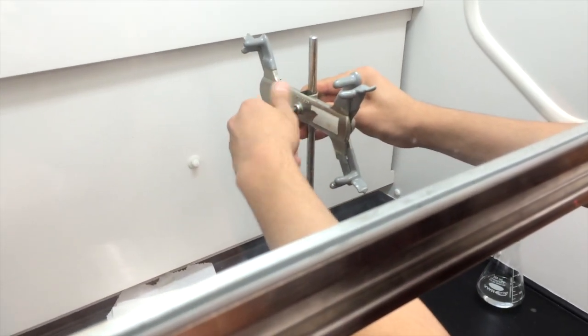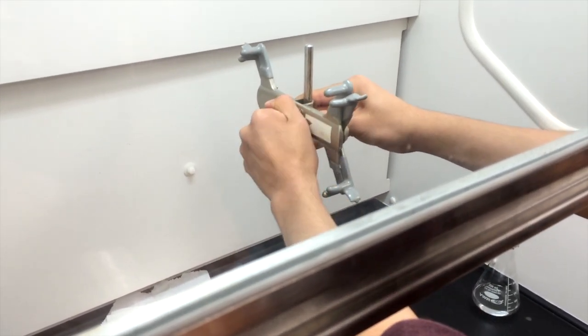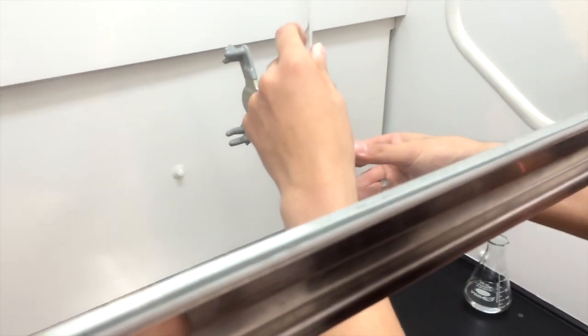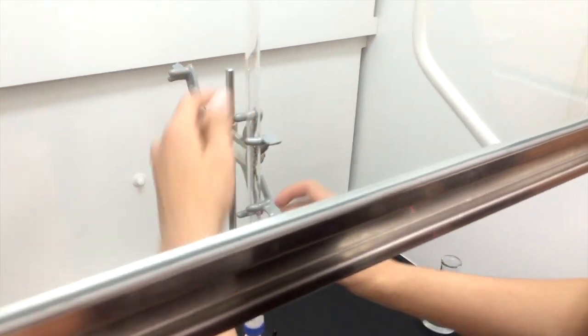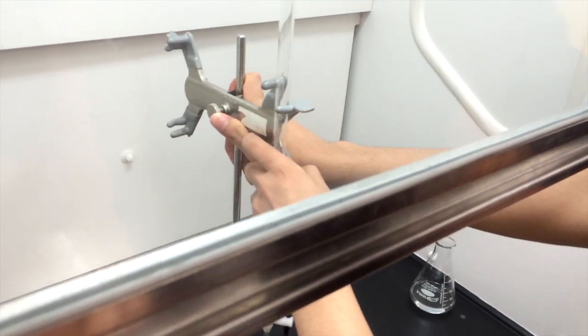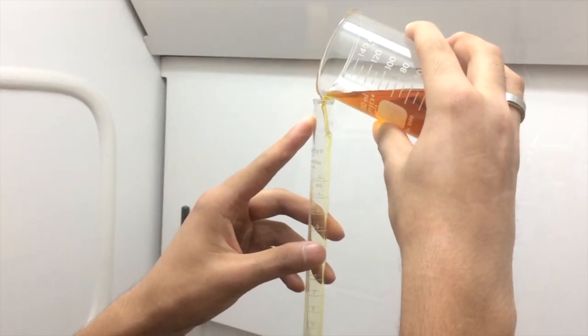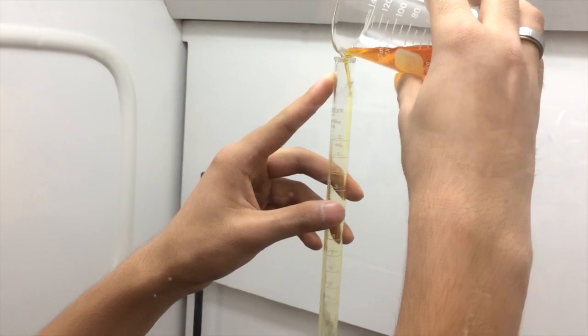Using a burette holder, assemble your burette so that it is stable and level. Transfer some iodine solution into the opening of the burette; you can use a funnel to prevent any spills.